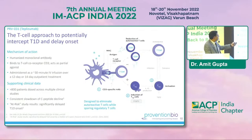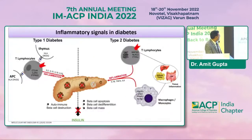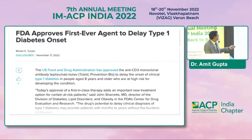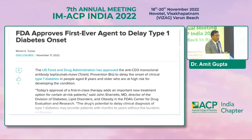Teplizumab is administered as a 30-minute IV infusion over a 12- to 14-day outpatient treatment course. The T-lymphocyte plays a very important role in autoimmune beta cell destruction. As announced on November 17th, the US FDA approved this anti-CD3 monoclonal antibody to delay the onset of clinical type 1 diabetes in people aged 8 years and older who are at high risk for developing the condition — showing that immune system modulation can delay type 1 diabetes by a couple of years.